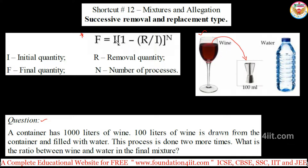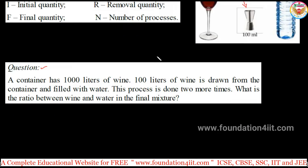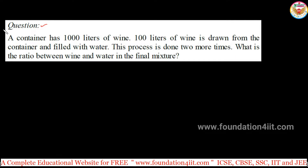So if you apply this formula — F equals I into (1 minus R by I) whole power N — where I is the initial quantity, F is the final quantity, R is the removal quantity, and N is the number of processes. Let me show this with the formula — it is very easy.